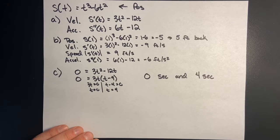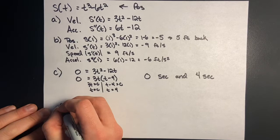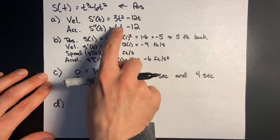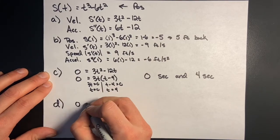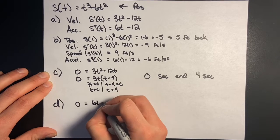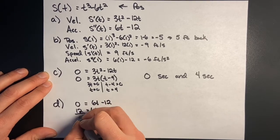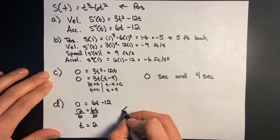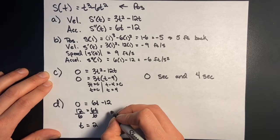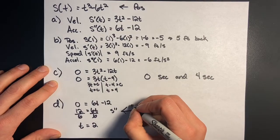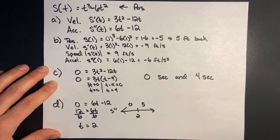Part d asks when the particle is speeding up or slowing down. I need to find when acceleration is positive — that's speeding up — and when it's negative — that's slowing down. I set the acceleration function equal to zero: 6t minus 12 equals 0, add 12, divide by 6, giving t equals 2 as my inflection point. I use a sign chart for s''(t) and pick test points on either side of 2 — zero and five seem easy.